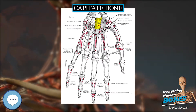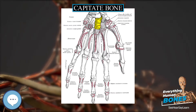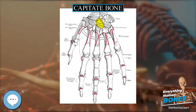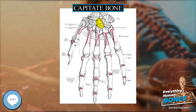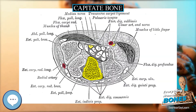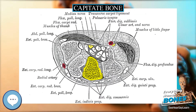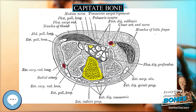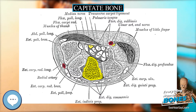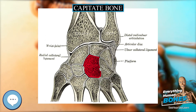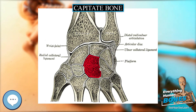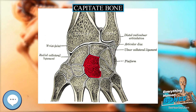The superior surface is round, smooth, and articulates with the lunate bone. The inferior surface is divided by two ridges into three facets, for articulation with the second, third, and fourth metacarpal bones, that for the third being the largest.